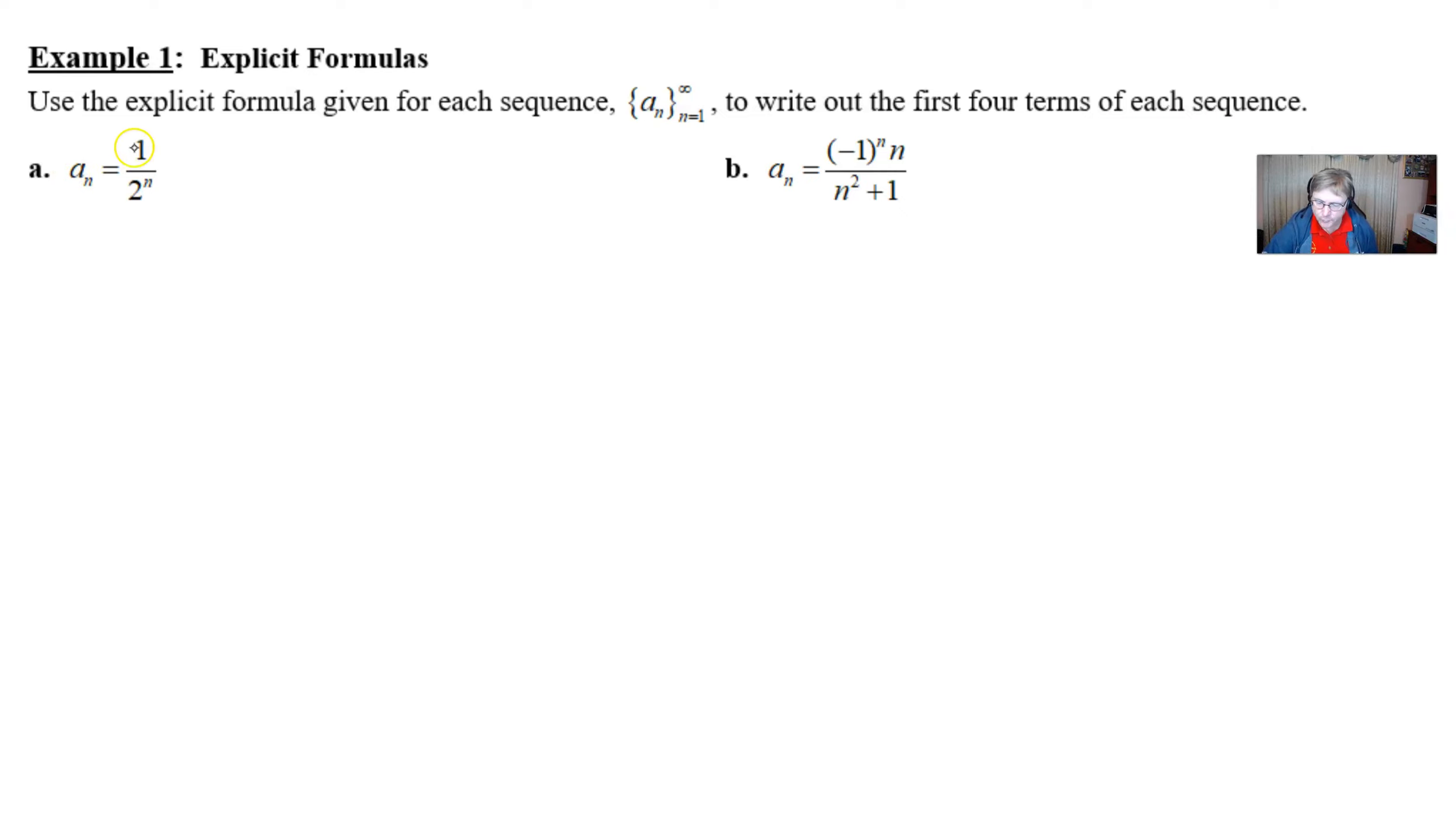So, for problem number a, if a sub n is equal to 1 over 2 to the nth power, we just simply write a1, we let n be 1, 1 over 2 to the first, and you probably don't even have to write 2 to the first because you can see that that's going to be 1 half. There's your first answer.